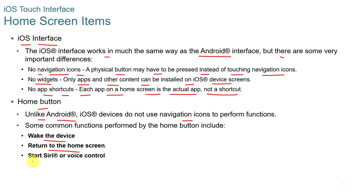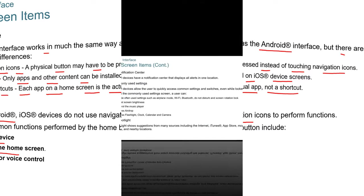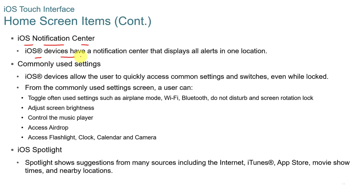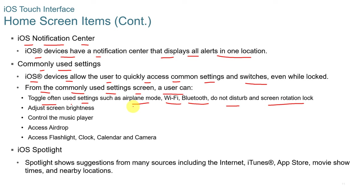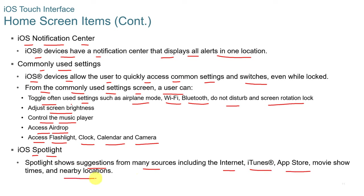On iOS devices, a physical home button performs common functions such as waking the device, returning to the home screen, or starting Siri voice control. iOS devices have a notification center that displays all alerts in one location. From the commonly used settings screen, a user can toggle settings such as airplane mode, Wi-Fi, Bluetooth, do not disturb, and screen rotation lock, as well as adjust brightness, control the music player, access AirDrop, flashlight, clock, calendar, and camera. iOS Spotlight shows suggestions from many sources including the internet, iTunes, App Store, movie store, and nearby locations.